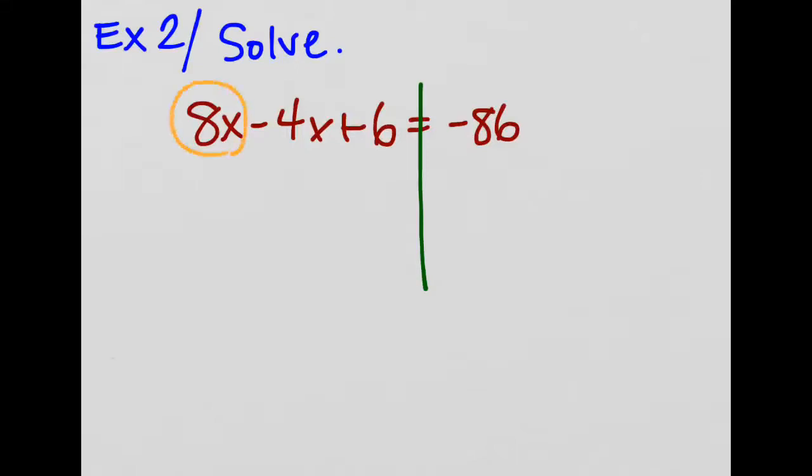So I can't really put all of my things together in the way that I might want to originally. So let's see our terms. I'm going to have my positive 8x. I also have a negative 4x I can put together. And I have this positive 6 and I have this negative 86. And those can be combined, but they're on opposite sides of the equal sign. So I can't put them together. I can only group the like terms that are on the same side.